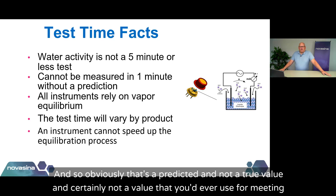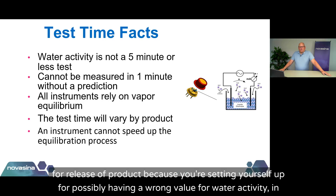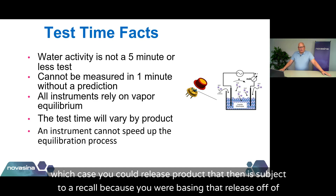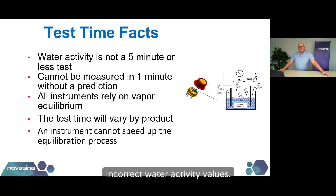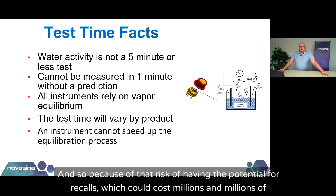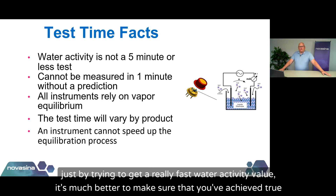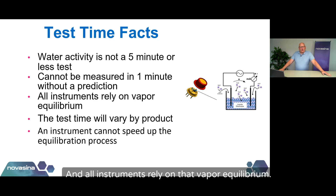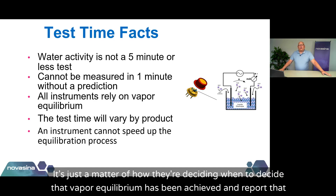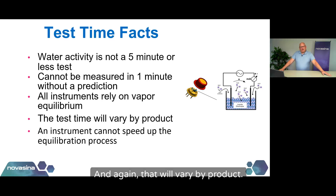You should never use a predicted water activity value for meeting regulations or for release of product, because you're setting yourself up for having a wrong value. You could release product that is then subject to a recall because you based that release on incorrect water activity values. Because of that risk of recalls — which could cost millions of dollars just by trying to get a really fast water activity value — it's much better to make sure you achieve true vapor equilibrium. All instruments rely on that vapor equilibrium; it's just a matter of how they decide when equilibrium has been achieved and report that value, which will vary by product.